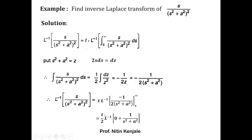Now, L inverse of 1 upon (s² + a²) is (1/a) sin(at). Therefore the inverse Laplace transform of s upon (s² + a²)² is equal to t/2 · (1/a) sin(at). I hope you understood how to use this division by t technique to find the inverse Laplace transform of φ(s).